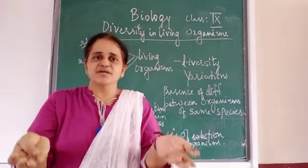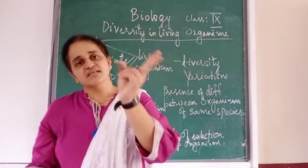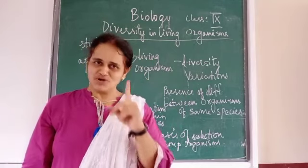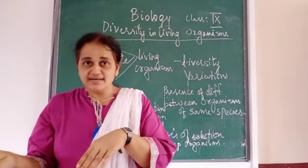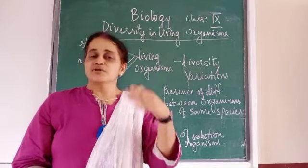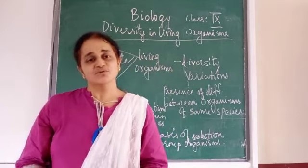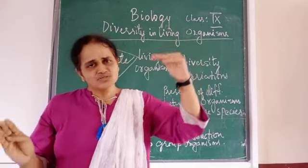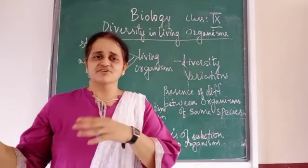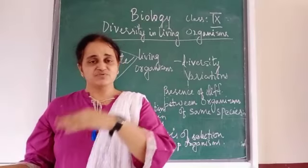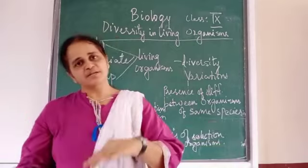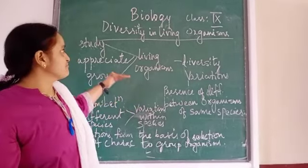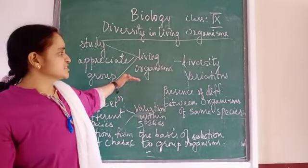Now in your class, when you compare your friends, though there are some similarities — like you have two eyes, your friend also has two eyes; you have one nose, your friend also has one nose — still you are different from your friend. Maybe your hair color is different, your eye color is different. Height, body structure, personality — these differ. So in your class there is difference between two students. Same way, in plants and animals also there are differences. Did you all understand this concept of variations, which forms the basis for grouping?